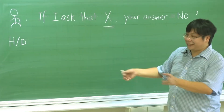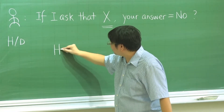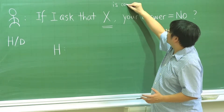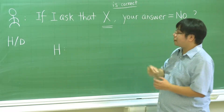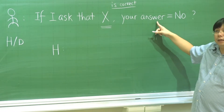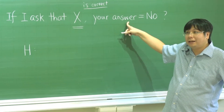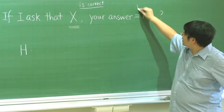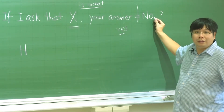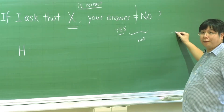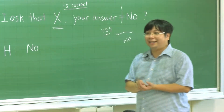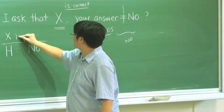Let's try the honest people. Assume that x is correct. If x is correct, honest people will say 'yes.' Then: is yes equal to no? No. And coming from the mouth of the honest person, the answer will be 'no.' So in the case where x is correct, the honest person says 'no.'